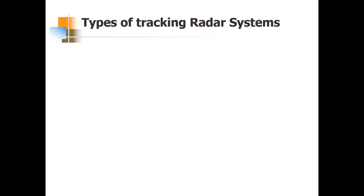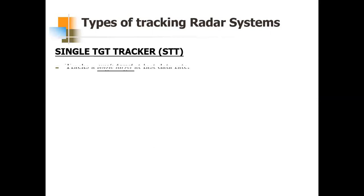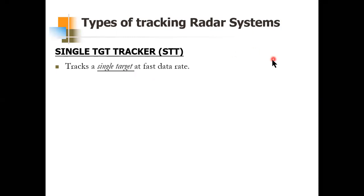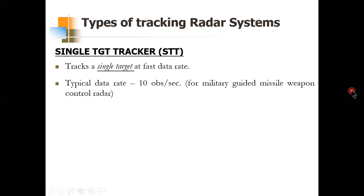Starting with the first one: Single Target Tracker (STT). This tracker is designed to continuously track a single target at a fast data rate — the data rate is relatively faster. The problem is it tracks only a single target. The data rate depends on the application, but a typical data rate is 10 observations per second, which is usually used for military guided missile weapon control radar.